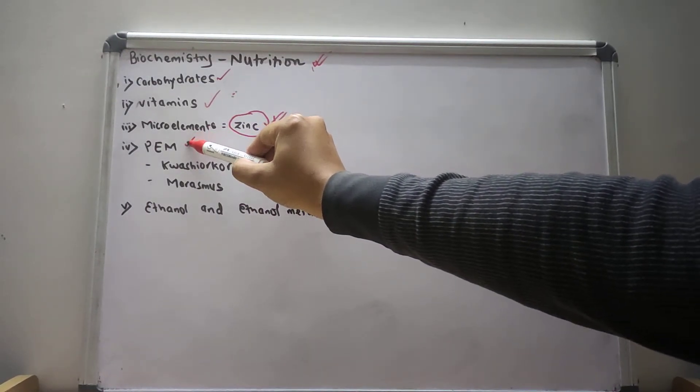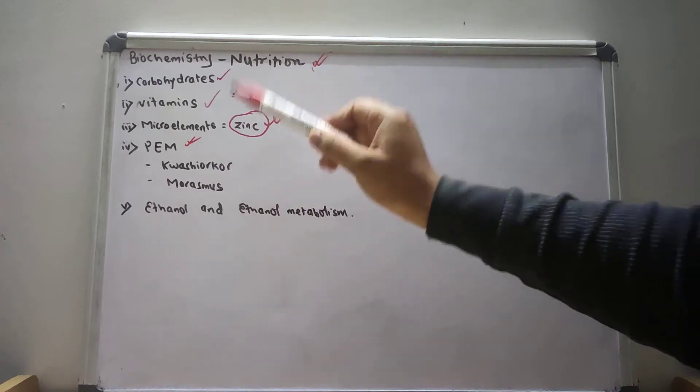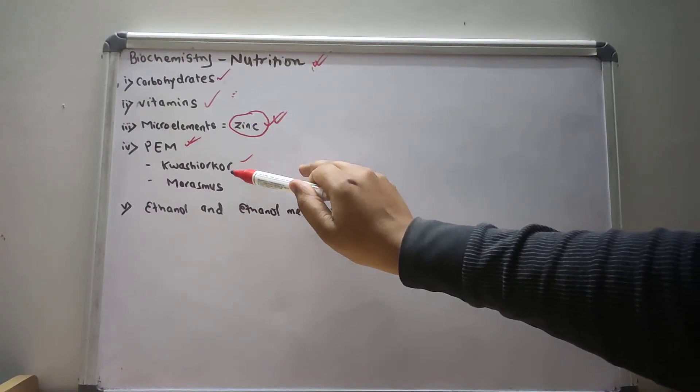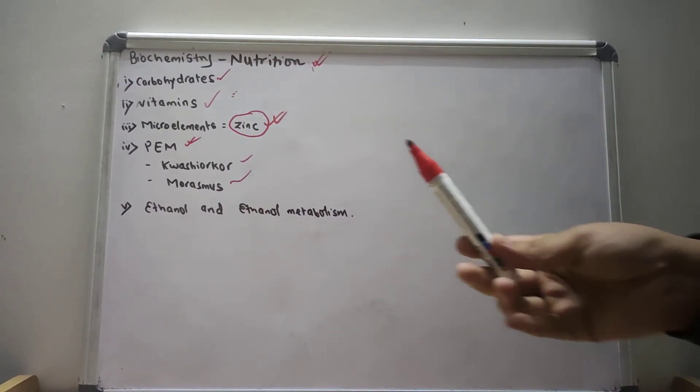Another topic is protein energy malnutrition. Inside protein energy malnutrition, we will mainly discuss kwashiorkor and marasmus.